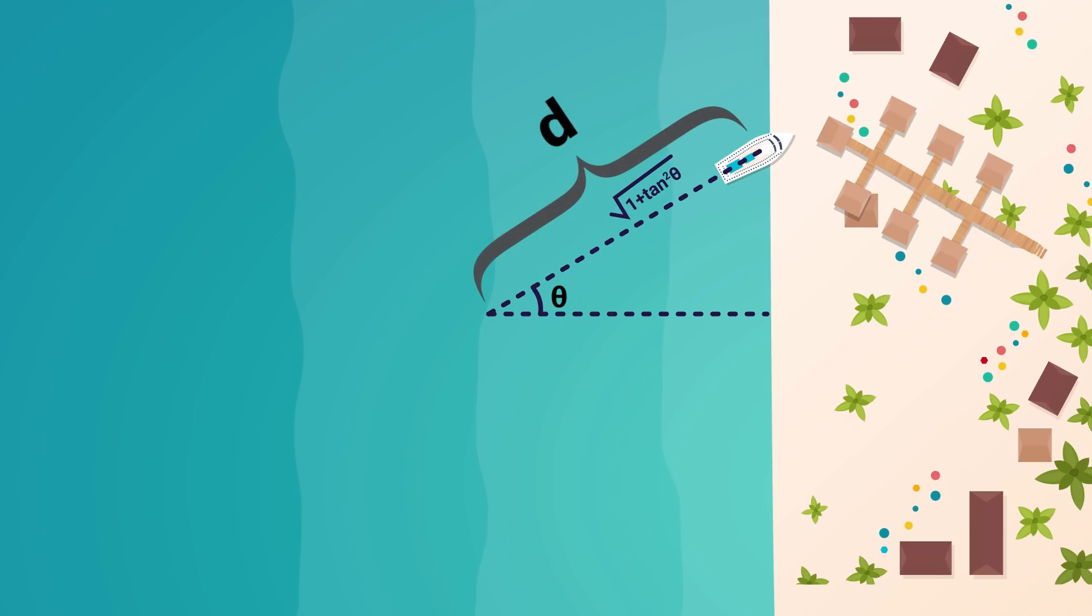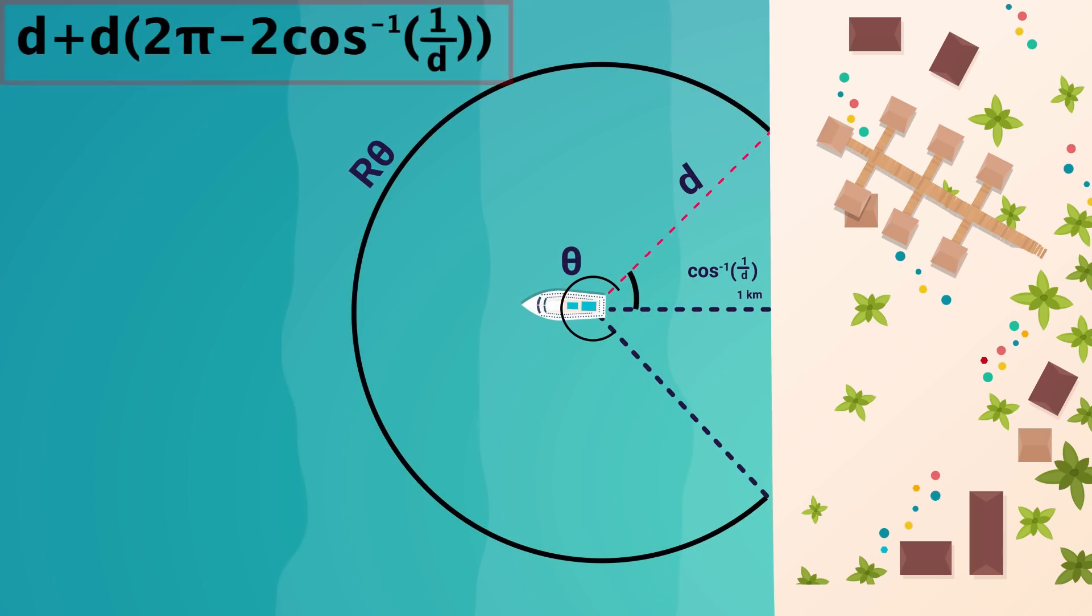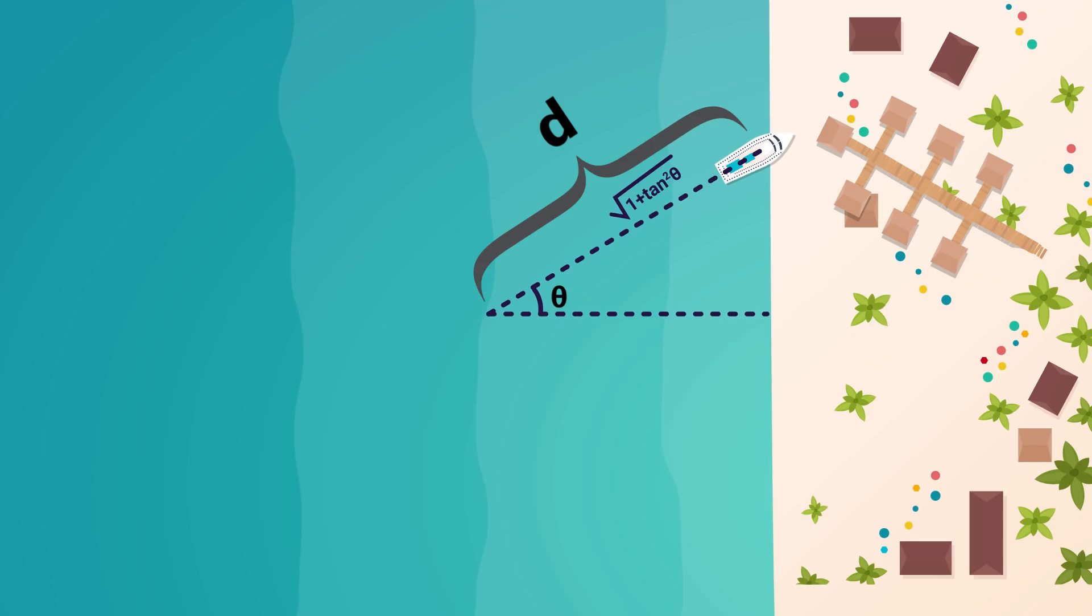First off, the goal is to find the optimal value of theta. Currently it's just arbitrary. Now I could have instead just said, drive some distance d in whatever direction as this first step, just like before. It doesn't really matter, because I mean, the theta we pick dictates that distance anyway. But the thing is, before it was easier to make an equation as a function of d, here it will actually be easier to make it as a function of that angle.